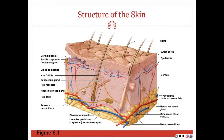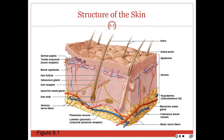Here we have the structure of the skin. The skin is the largest organ in the body, and it consists of the outer epidermis and the deeper area called the dermis. The hypodermis underlies the dermis but is not a true part of the integumentary system.